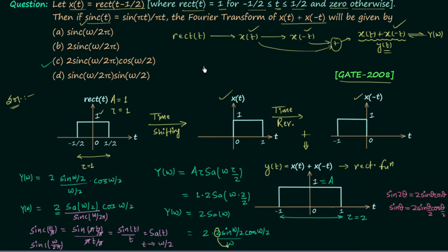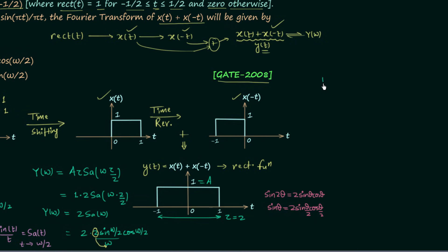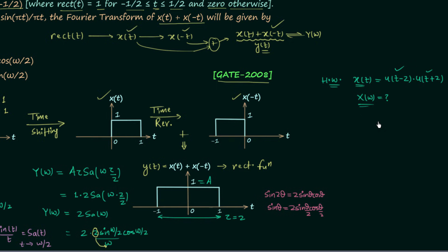For the homework problem, we have a time-domain signal x(t) = u(t − 2) × u(t + 2), and you need to calculate the Fourier transform X(ω). First, plot the waveform of u(t − 2), then plot u(t + 2), then multiply the two waveforms, and from the resultant waveform obtain the Fourier transform. Post your answer in the comments. See you in the next lecture.